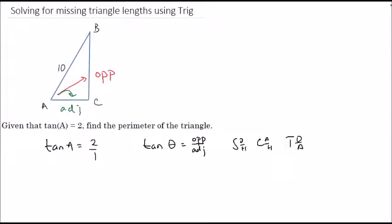This means the ratio of BC, which is the opposite side, to AC is 2 to 1. That doesn't necessarily mean BC and AC are themselves 2 and 1 — they just have to be in a ratio of 2 to 1. We also need to make sure the hypotenuse is 10, as given in the problem.